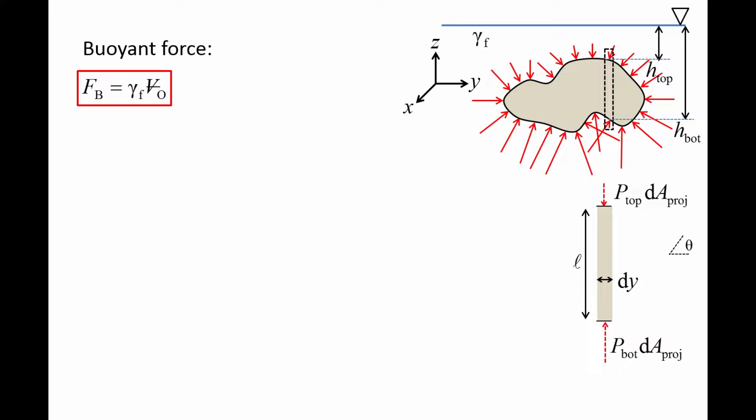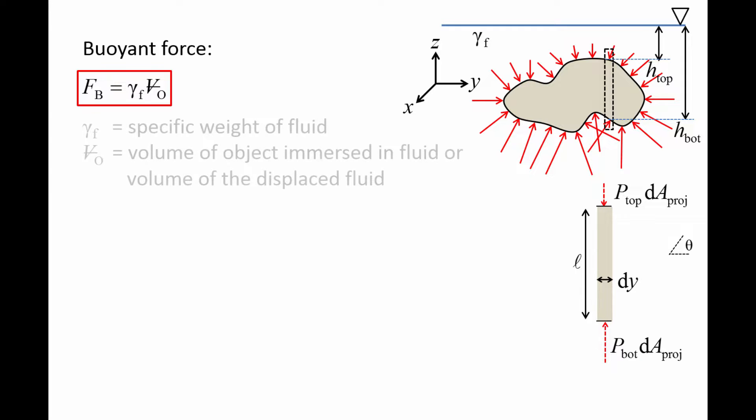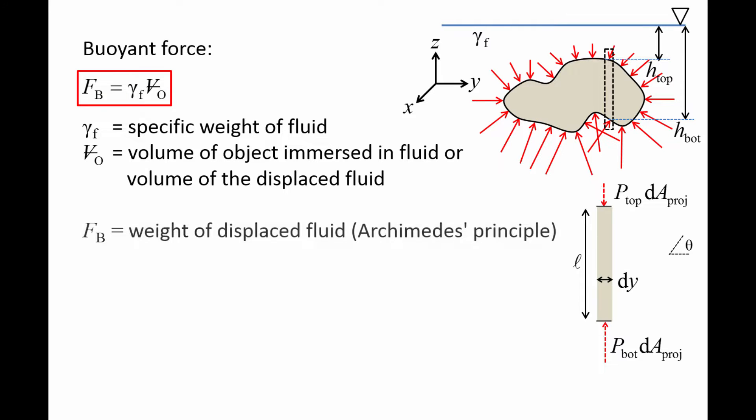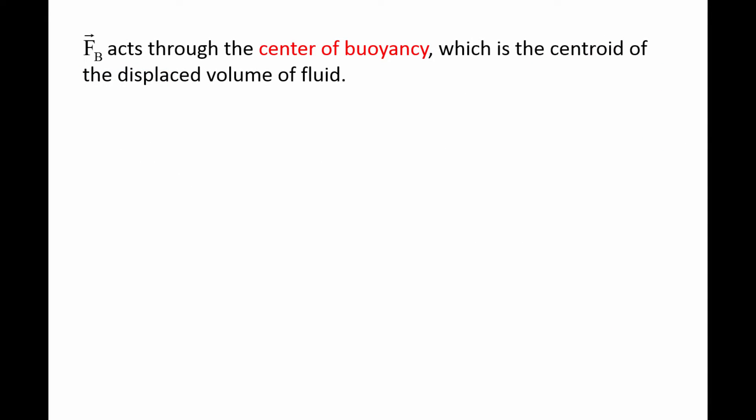The buoyant force points upward. The magnitude of this force is the specific weight of the fluid gamma F times the volume of the object immersed in the fluid Vo. Vo also could be thought of as the volume of fluid that is displaced by the object's presence. That means the buoyant force is also equal to the weight of the displaced fluid. This result is often called Archimedes' principle. The buoyant force acts through the center of buoyancy, which is the centroid of the displaced volume of fluid.